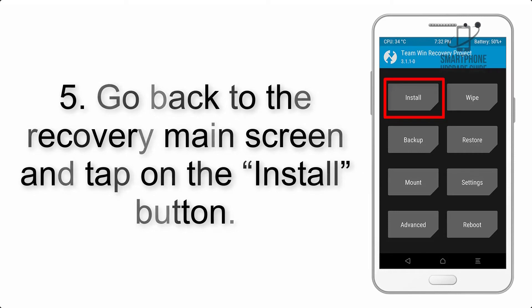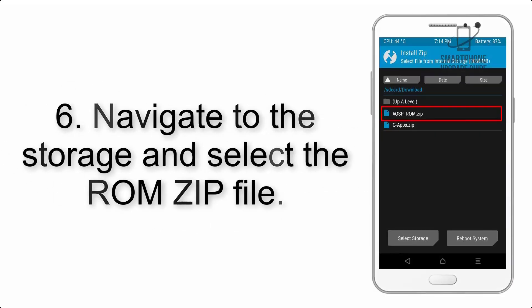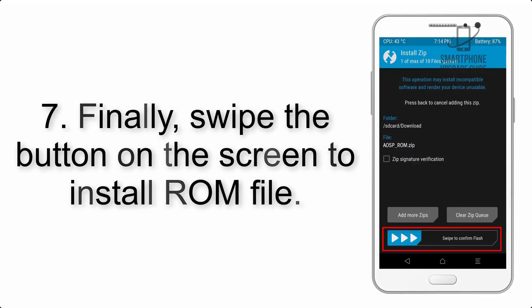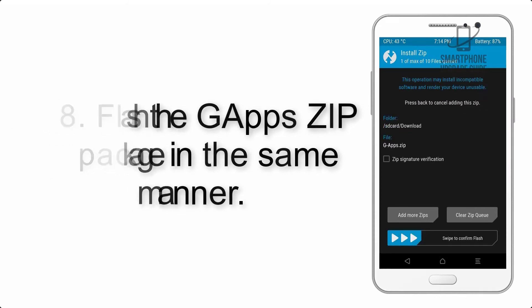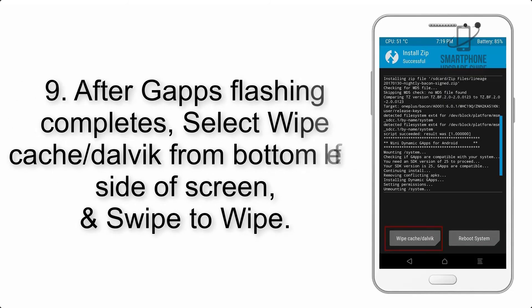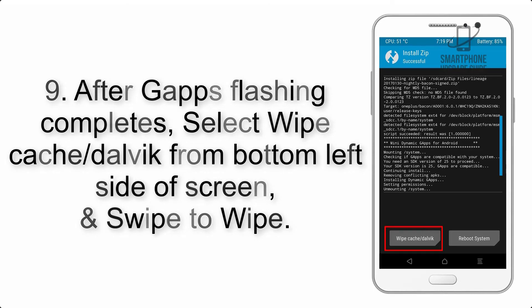Step 5: Go back to the recovery main screen and tap on the Install button. Step 6: Navigate to the storage and select the ROM zip file. Step 7: Swipe the button on the screen to install the ROM file. Step 8: Flash the GApps zip package in the same manner.